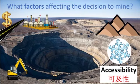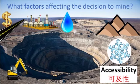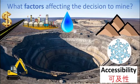The final thing to consider regarding accessibility is processing. Generally, mining companies want to locate the mine as close to processing plants as possible to keep costs down. However, processing mined material requires a lot of water, and if the mine is in a very arid or dry area, it might not be possible to process the material close to the mine. This is something else mining companies must consider before opening.